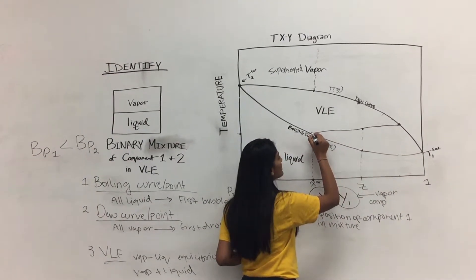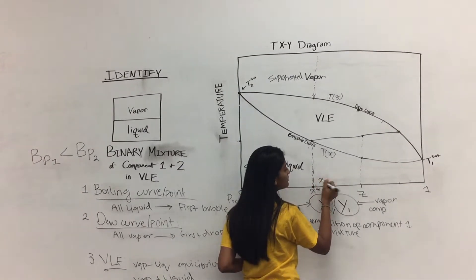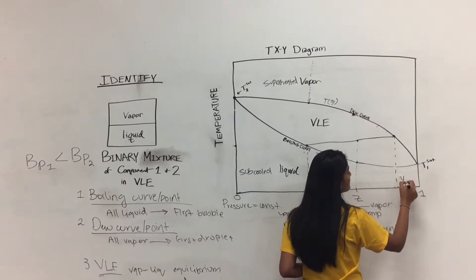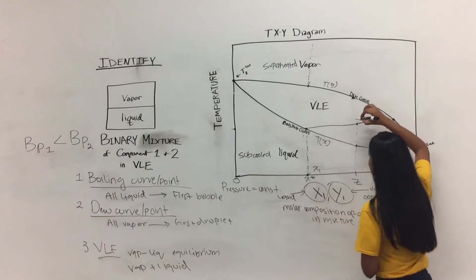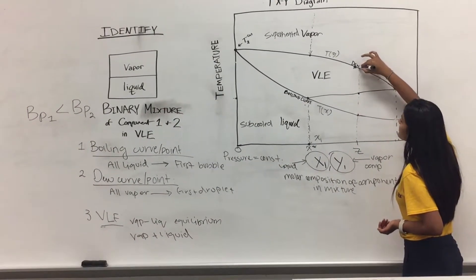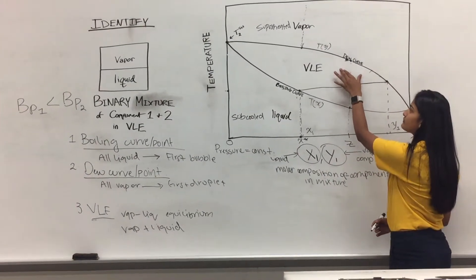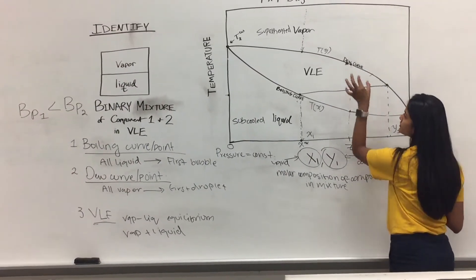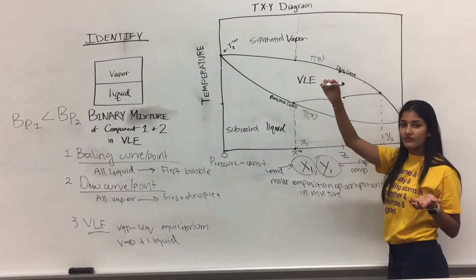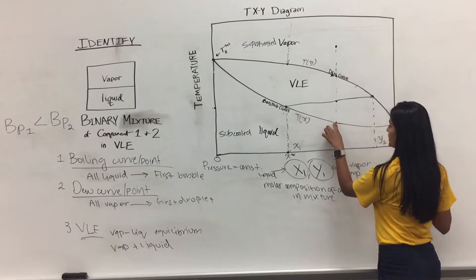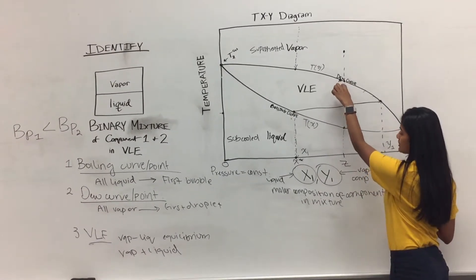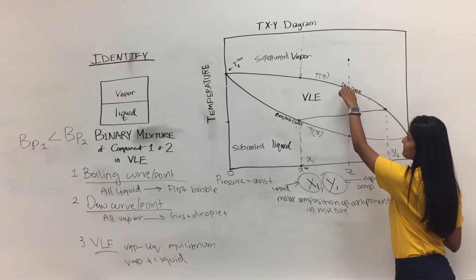The point where the tie line intersects the boiling curve gives us the liquid composition of component 1, and the point where it intersects the dew curve gives us the vapor composition of component 1. As we continue heating, more of the mixture enters the vapor phase until we reach the dew point, where essentially all is vapor except for the last liquid droplet. Once past that curve, all of it is in vapor phase. So at the boiling point, all of this composition is liquid, and at the dew point, all of it is in vapor phase.